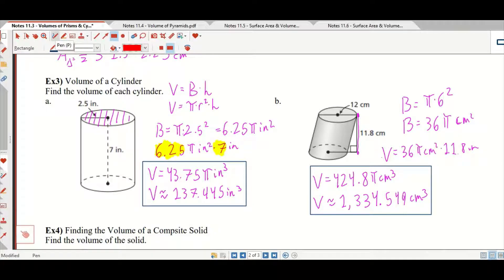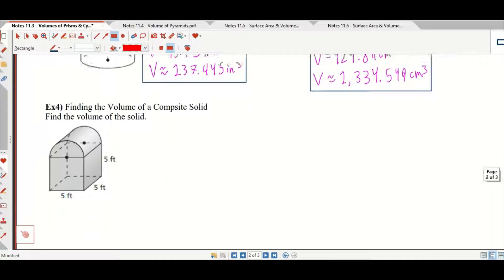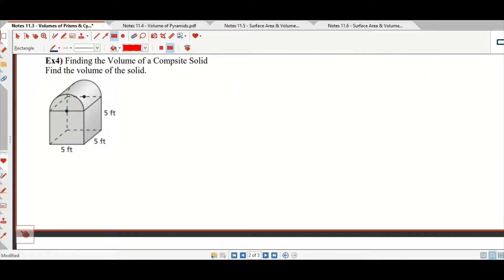Now to find the volume of a composite solid like these guys down here, we're just going to find the volume of each part individually. It looks like what I've got here is this cube and then half of a cylinder.